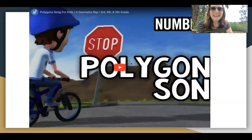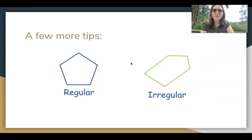Hope you enjoyed that song and that you learned some of the shape names that you haven't learned before. A few more tips about shapes. So we have regular and irregular shapes. And regular shapes are just that, you have equal sides and equal angles like this pentagon right here. And this irregular shape does not have equal sides or equal angles.